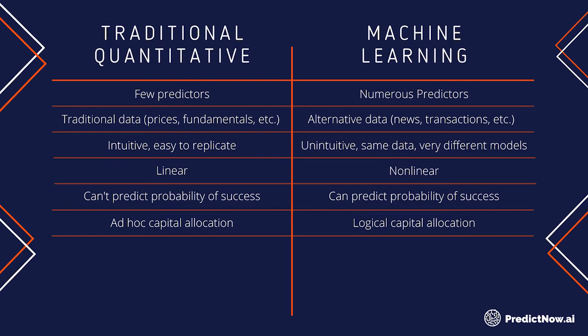One strong argument for the traditional quant model is that because it's simple, it's hard to overfit. Machine learning models are easy to overfit because they have so many moving parts. But some of the methods we have implemented are focused towards reducing this problem — maybe not completely eliminating it, but reducing the issue of overfitting. This reflects many recent advances in both machine learning in general and specifically in financial machine learning.